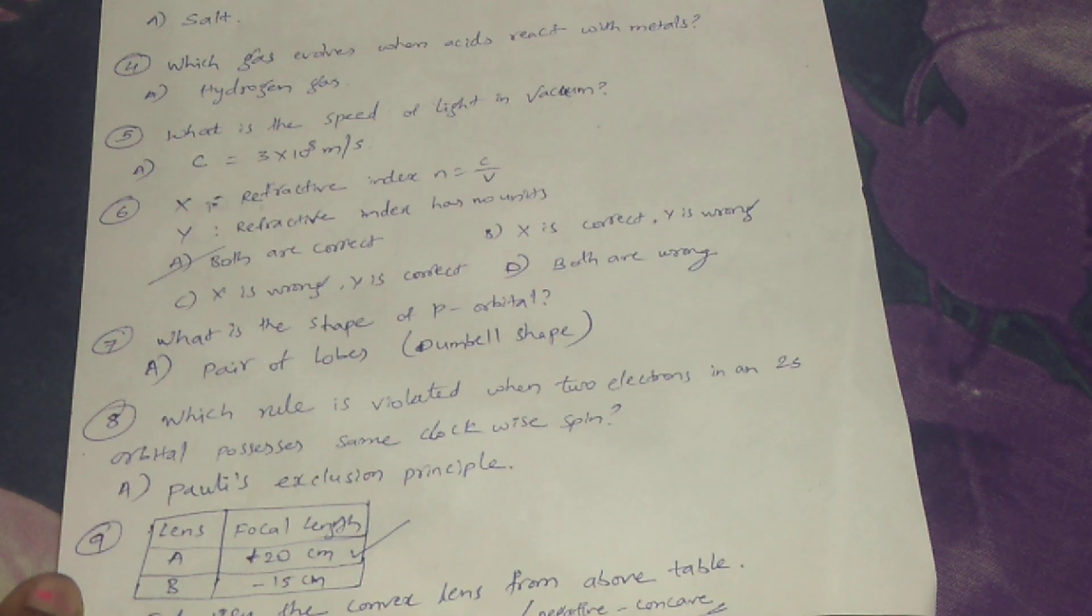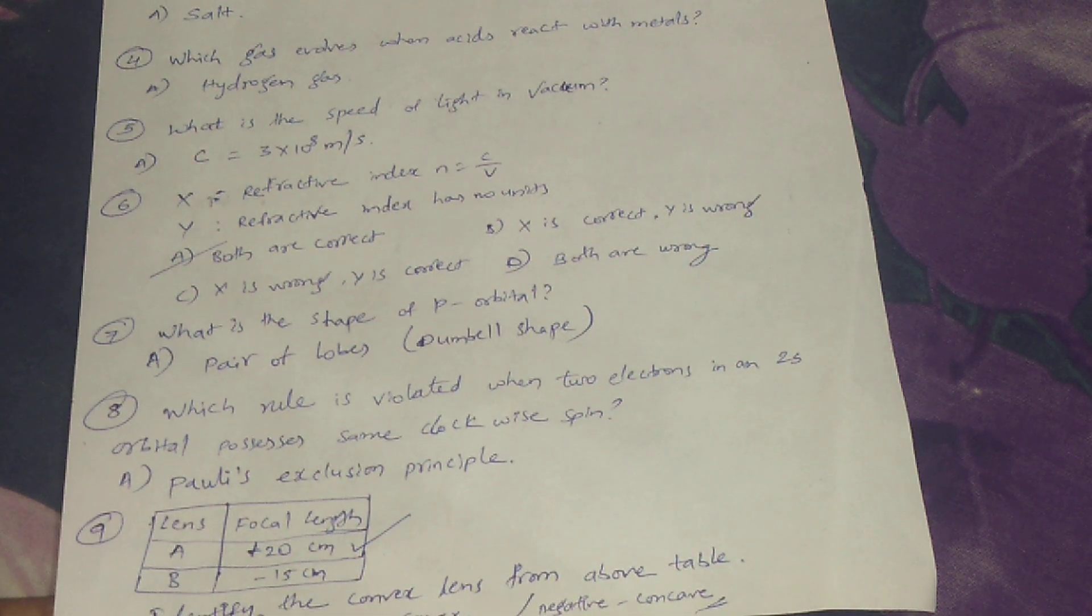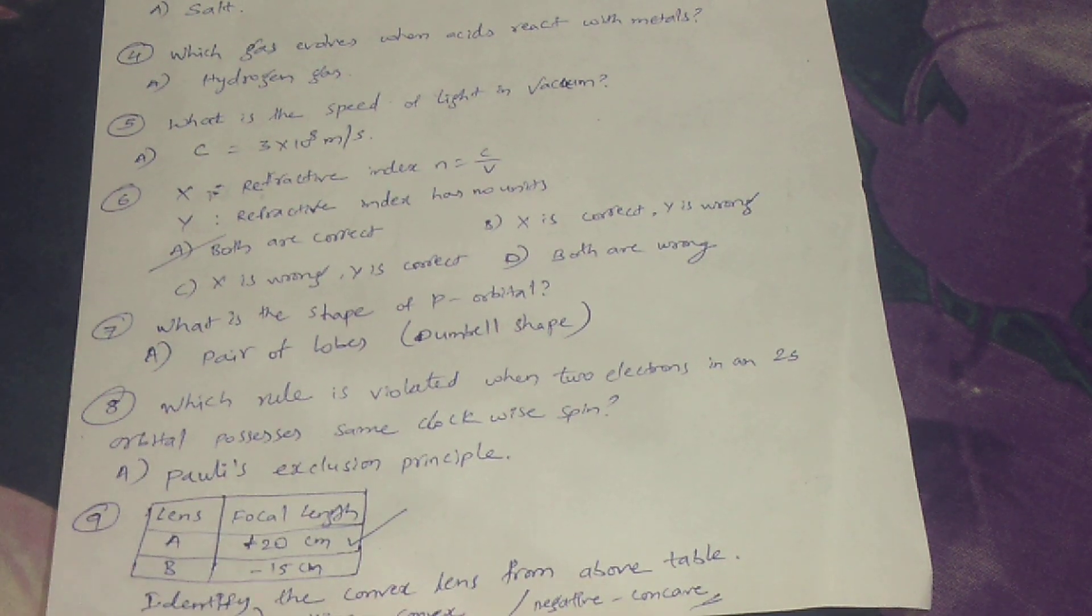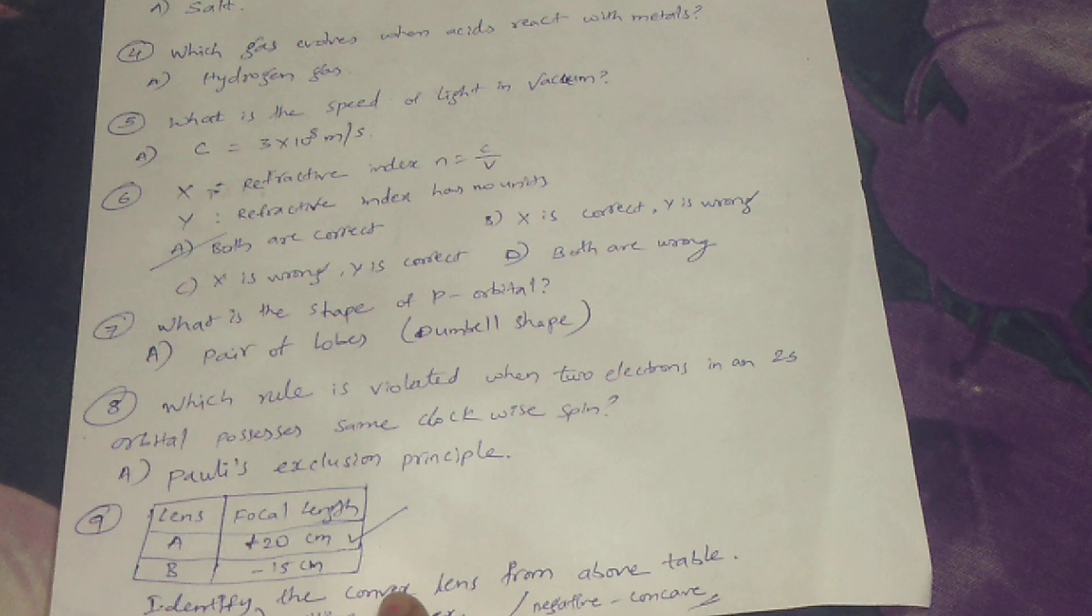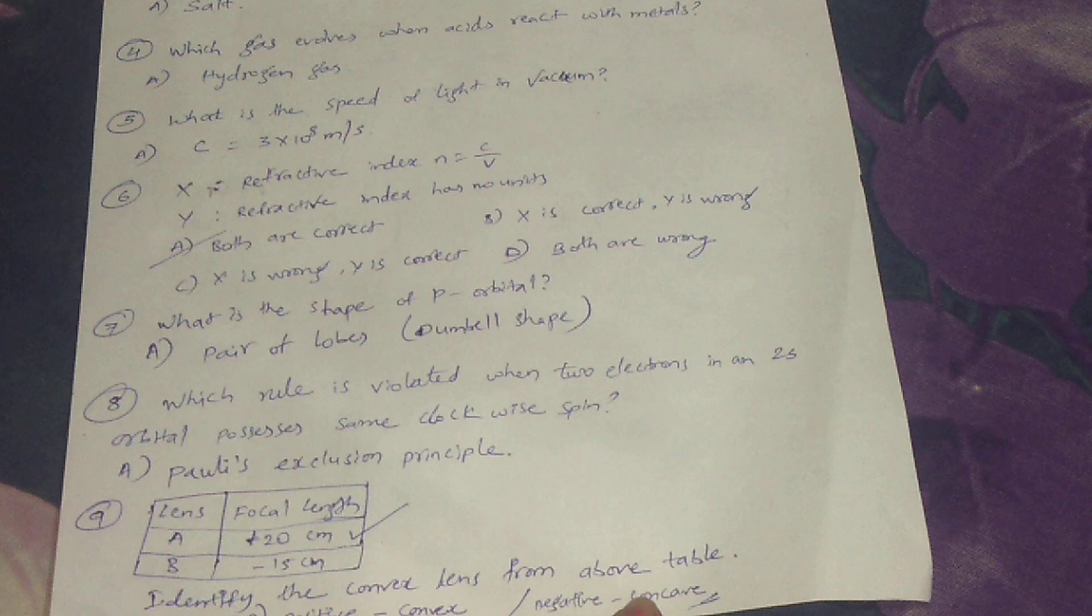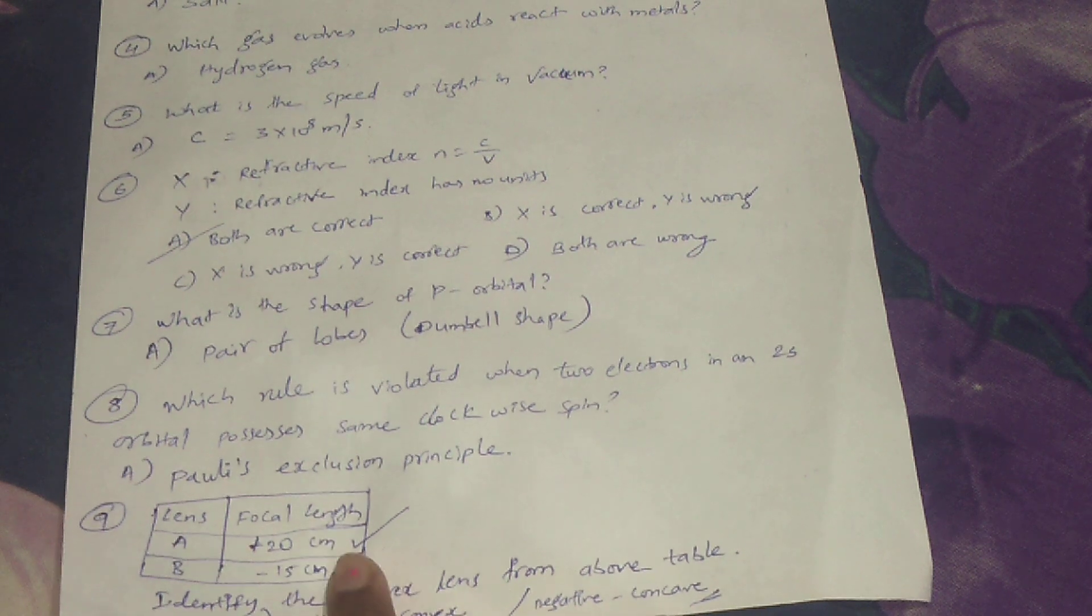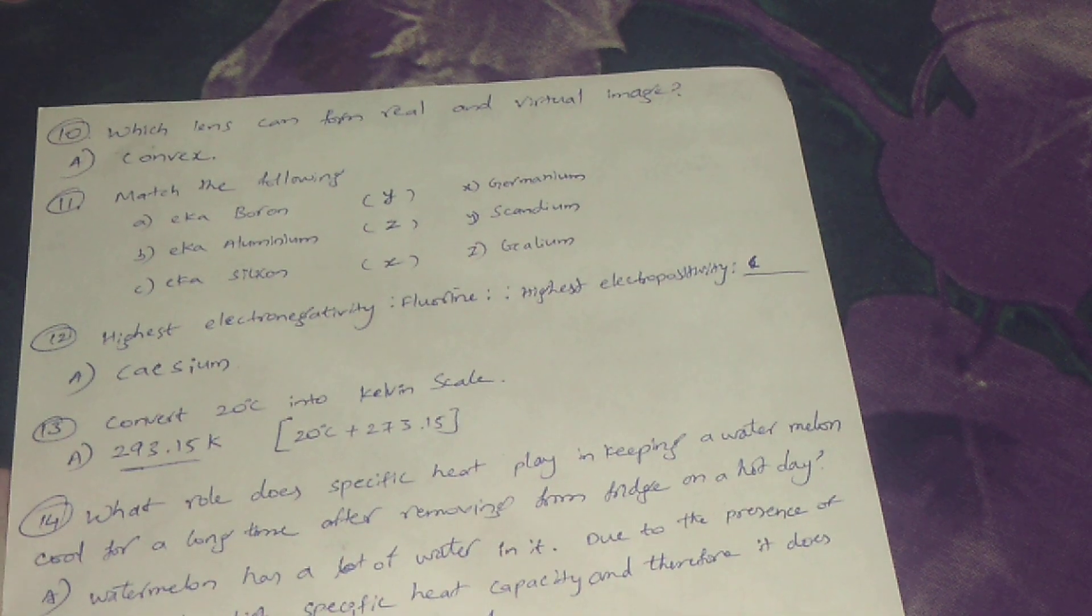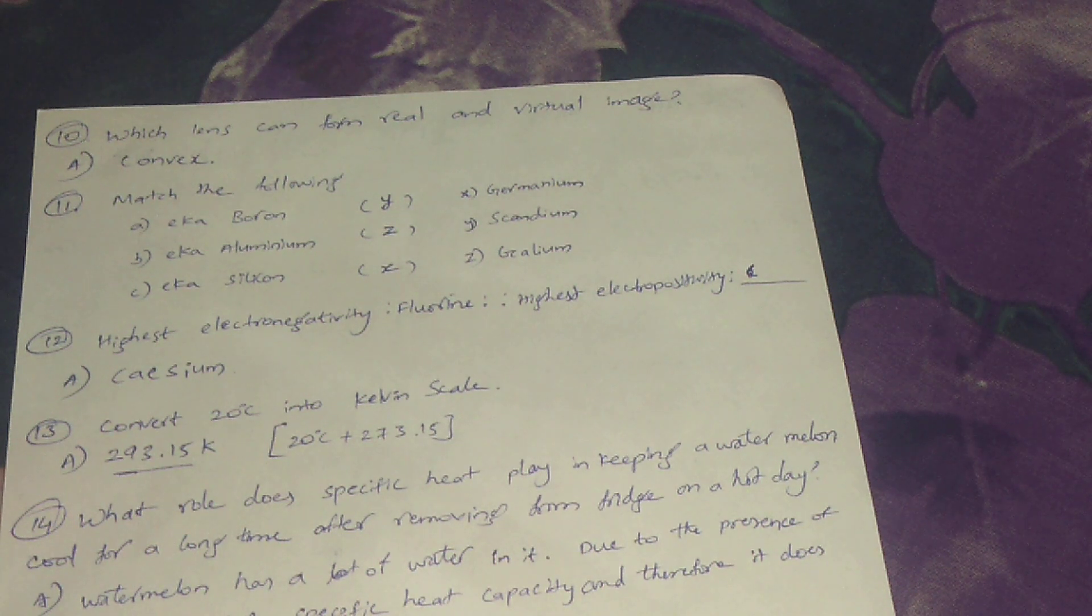Ninth one, lens focal length: A is plus 20 centimeters, B is minus 15 centimeters. Identify the convex lens from the above table. Positive focal length means convex lens, negative means concave lens. Plus 20 is the answer. Tenth, which lens can form real and virtual image? Answer is convex.